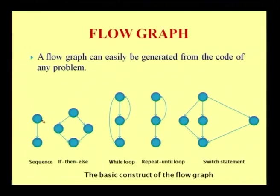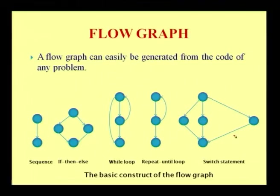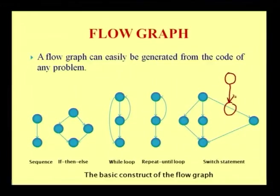A flow graph can easily be generated from the code of any problem. It can represent a sequence, an if-then-else construct, a while loop, a repeat-until loop, and a switch statement. These are the basic constructs for a flow graph, where a circle represents each line of statement and an arrow-marked line indicates the flow from one line to the next.